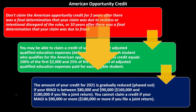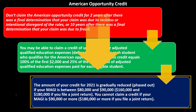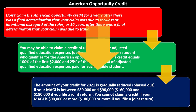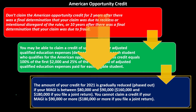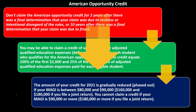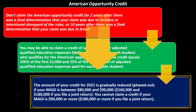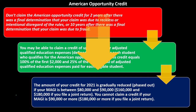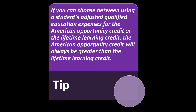The amount of your credit for 2021 is gradually reduced or phased out if your MAGI — modified adjusted gross income — is between $80,000 and $90,000, or between $160,000 and $180,000 if you file a joint return. You cannot claim a credit if your MAGI is $90,000 or more, or $180,000 or more if you file a joint return.